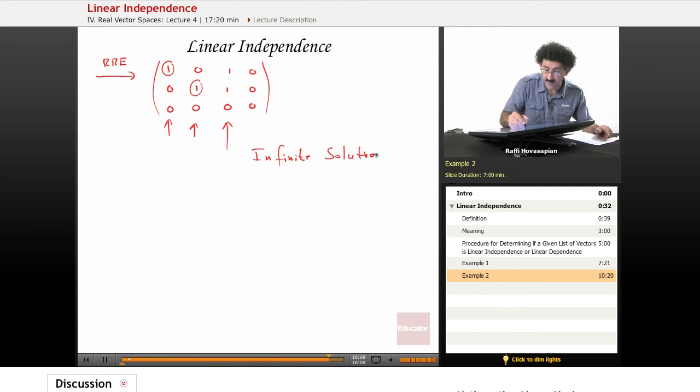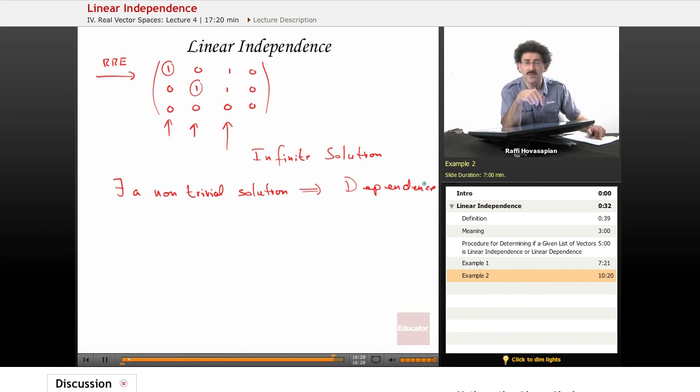In other words, there does exist a non-trivial solution. So there exists a non-trivial solution, which implies dependence. And what that means is that those three polynomials that I have, one of them can be expressed as a linear combination of the other two.